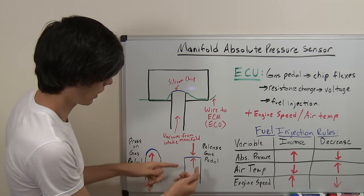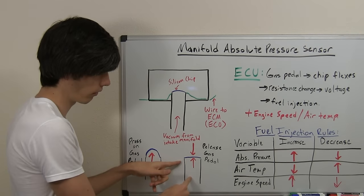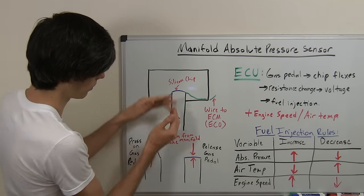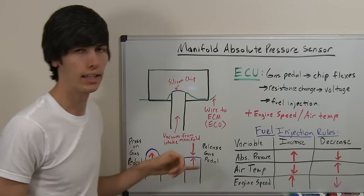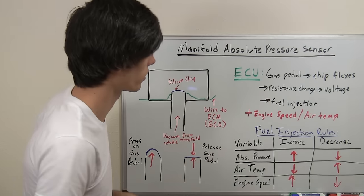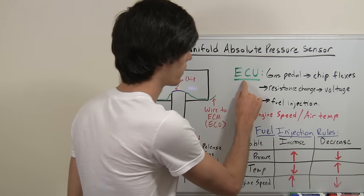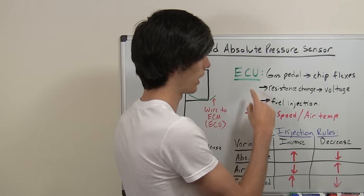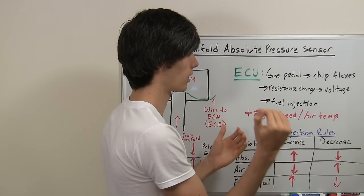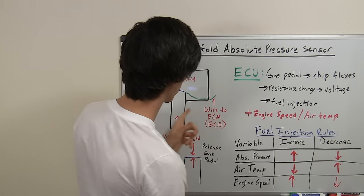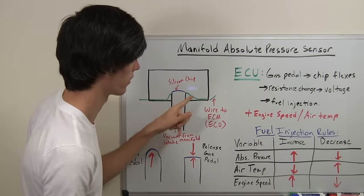So if you take your foot off the gas you're going to have more of a vacuum in the intake manifold so that silicon chip is going to come back down like that. So as I was saying it alters the resistance of that silicon chip. The process that the ECU reads and manipulates is you press on the gas pedal that's going to allow more air to go in, with more air it's going to flex this silicon chip.